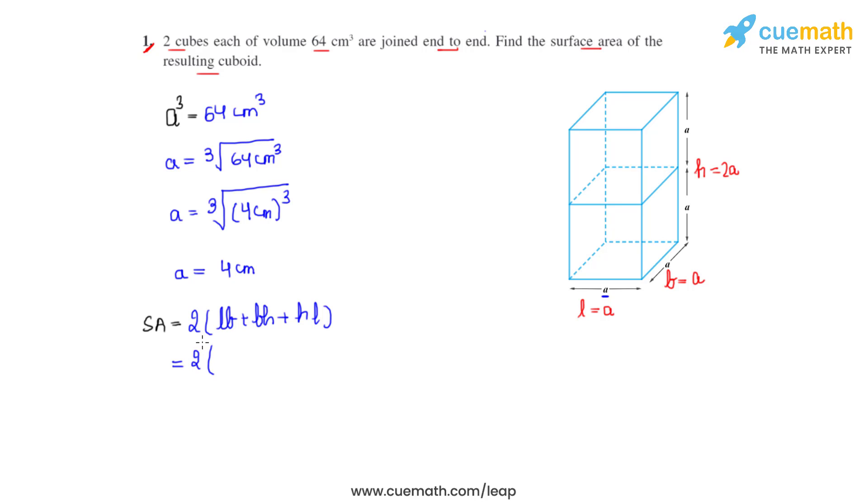We can write that as 2(4×4 + 4×8 + 8×4). Now let's calculate it: 4 times 4 is 16,